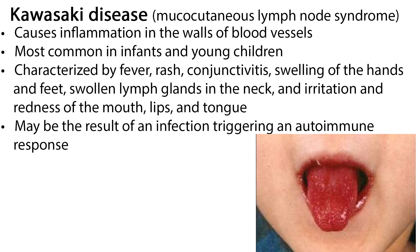Kawasaki disease, or mucocutaneous lymph node syndrome, is a rare childhood disease that causes inflammation in the walls of blood vessels. It is most common in infants and young children and is characterized by fever, rash, conjunctivitis, swelling of the hands and feet, swollen lymph glands in the neck, and irritation and redness of the mouth, lips, and tongue. The cause is unknown, but it may be the result of an infection triggering an autoimmune response. The heart may be affected, causing damage to the coronary arteries and to the heart muscle itself.